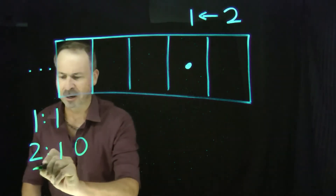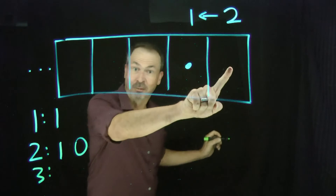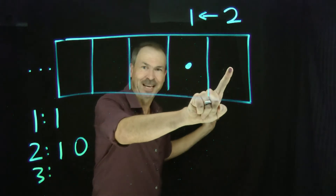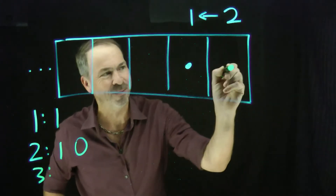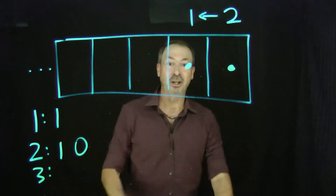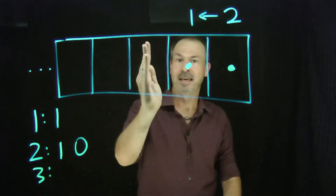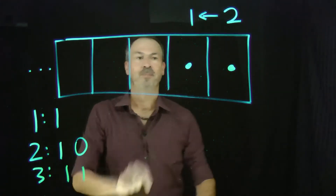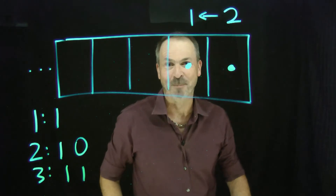Let's put a third dot in the machine — always the rightmost box. Here comes dot number three. The code for three is nothing, nothing, nothing, nothing — one dot, one dot. The code for three is one one.